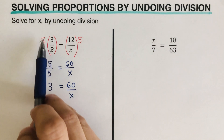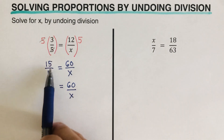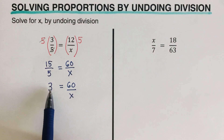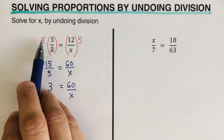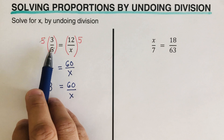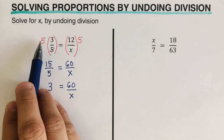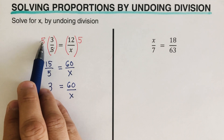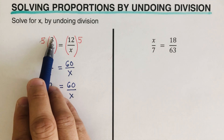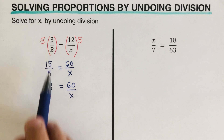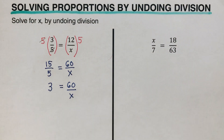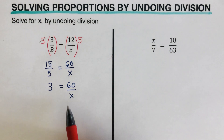Both approaches give the same result. Whether you cross the 5 out or multiply 5 times 3 to get 15 and then divide by 5, the answer is still 3. So we still have a denominator and we still have to undo the division again.